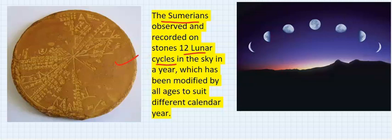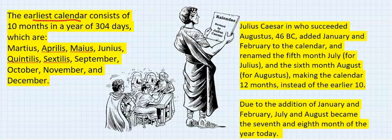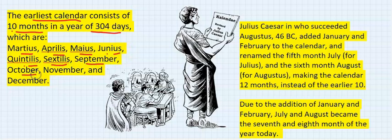The earliest calendar consists of 10 months in a year of 304 days. The 10 months in a year were Martius, Aprilis, Maius, Junius, Quintilis, Sextilis, September, October, November, and December. Then January and February were not in the calendar.